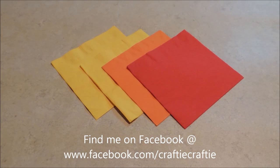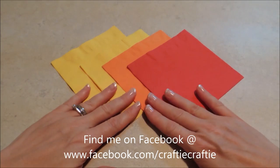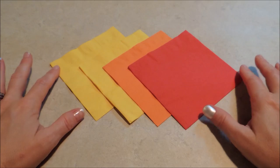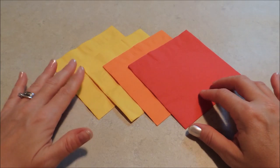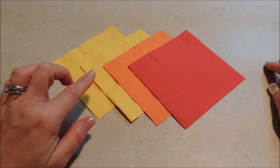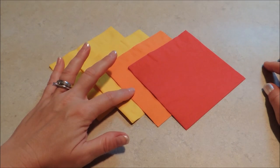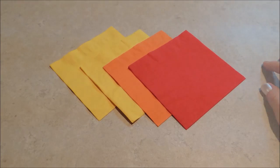For our campfire, we're going to need four napkins. This time I'm using the smaller size. These are the beverage size. I've got two in yellow, one in orange, and one in red.